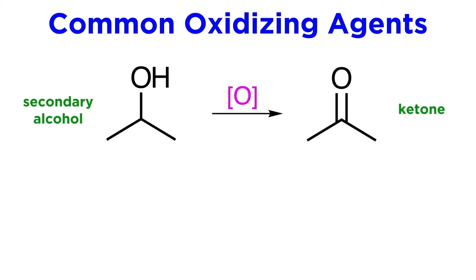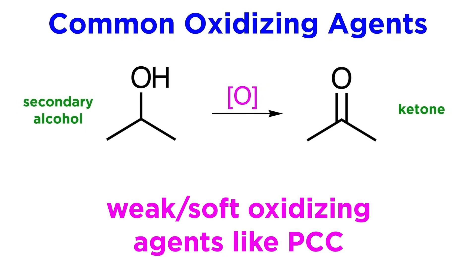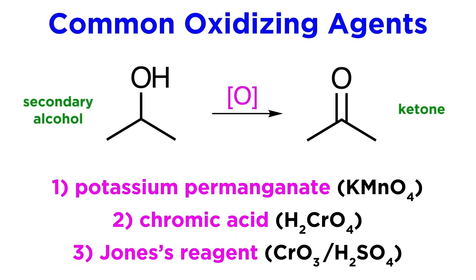Ketones can be produced under similar conditions as aldehydes. For example, they can be produced from secondary alcohols by common oxidizing agents like PCC, but also stronger oxidizing agents like CrO3, since carbon-carbon bonds will typically not be broken by such oxidations.